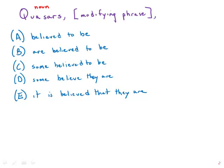And it actually is helpful sometimes when you have a modifier set off by commas just to try the sentence without that entirely and see how it works. So, if we just say quasars, believed to be, that's a participial phrase, so that's beginning another modifying phrase.